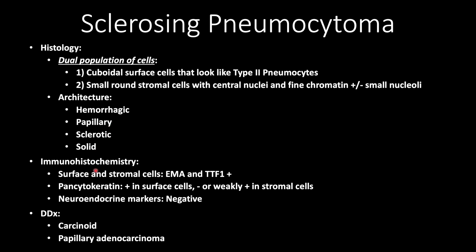On IHC, both the surface and stromal cells will be positive for EMA and TTF1. Pancytokeratin will be positive in the cuboidal surface cells, but negative or weakly positive in the stromal cells.